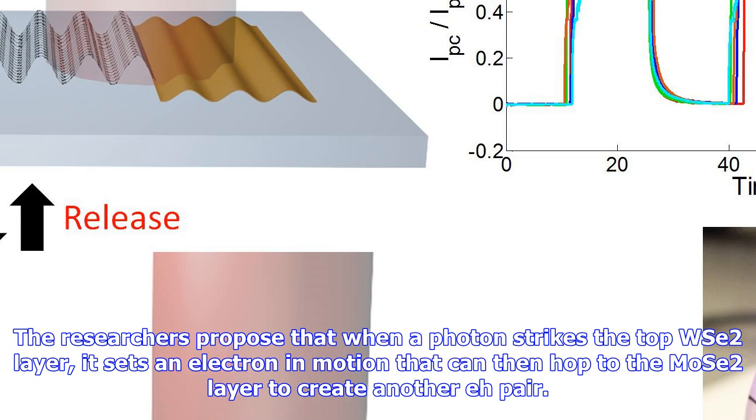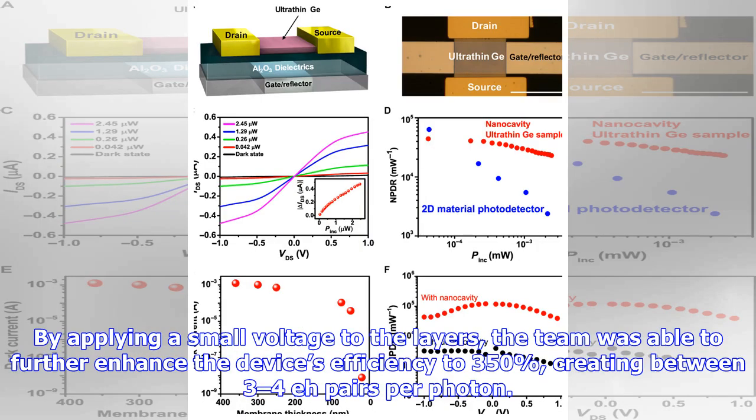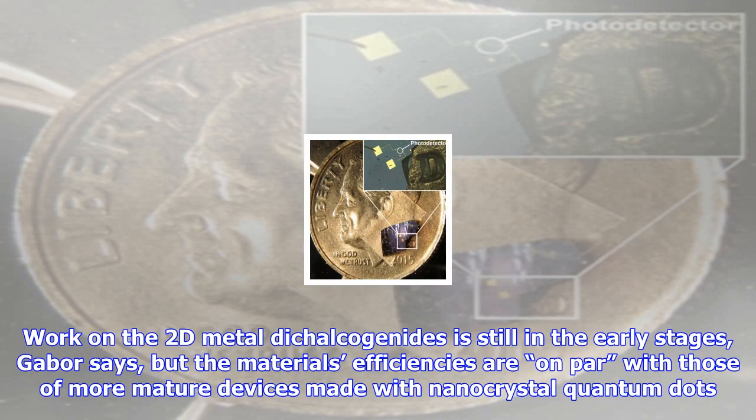it sets an electron in motion that can then hop to the MoS2 layer to create another exciton pair. By applying a small voltage to the layers, the team was able to further enhance the device's efficiency to 350%, creating between three to four pairs per photon.